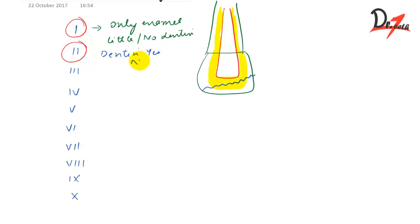Coming on to Class 3. In this also we have considerable dentin loss, but in addition to it, we have dental pulp which is exposed. The fracture will be something like this. Now our pulp will be exposed. So in Class 3, we have pulp exposed.